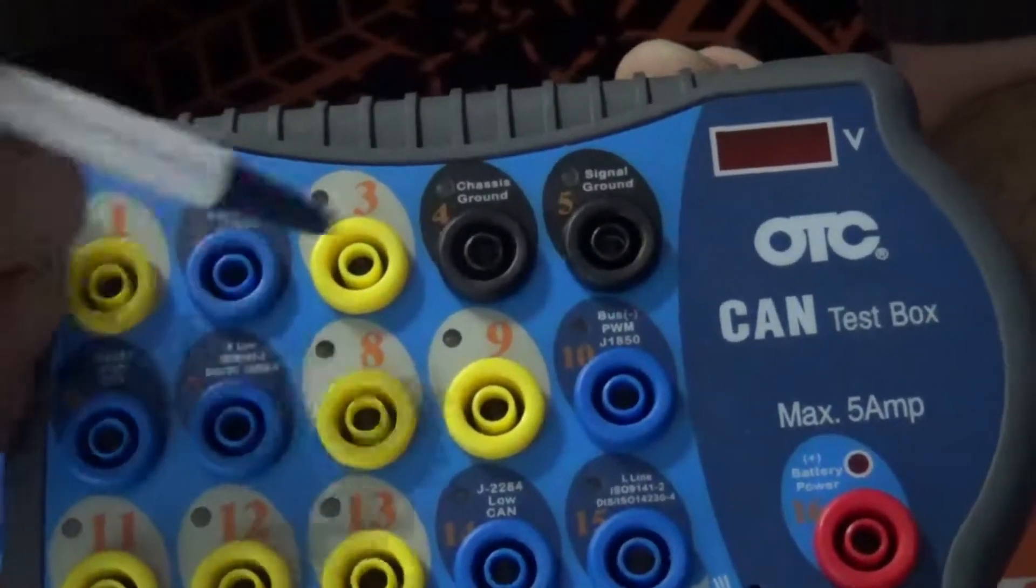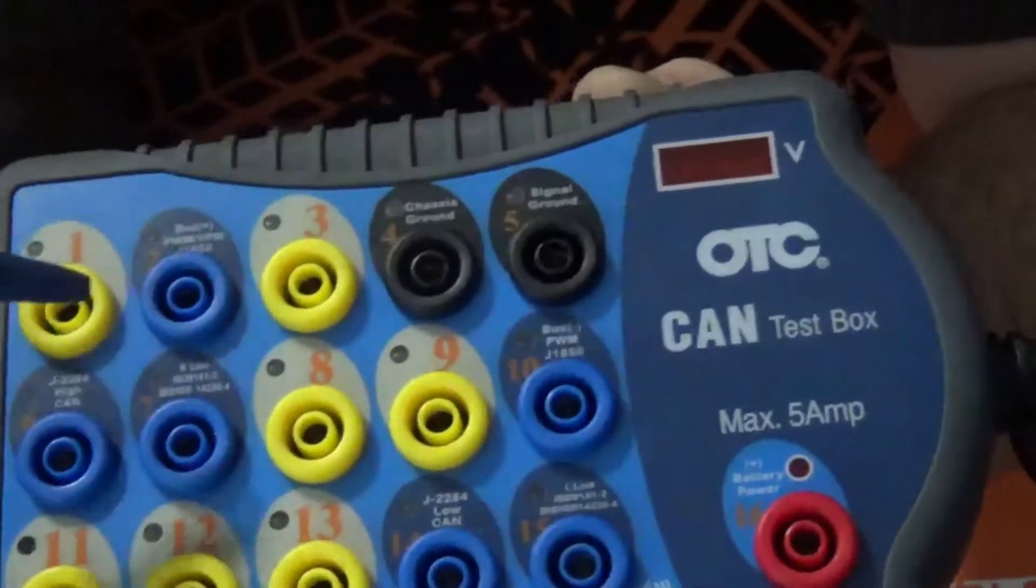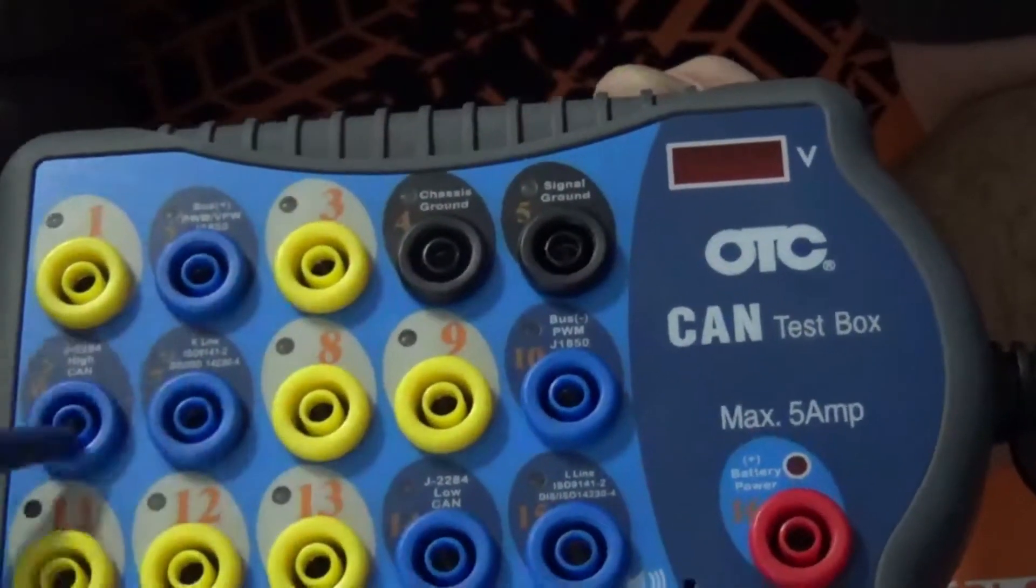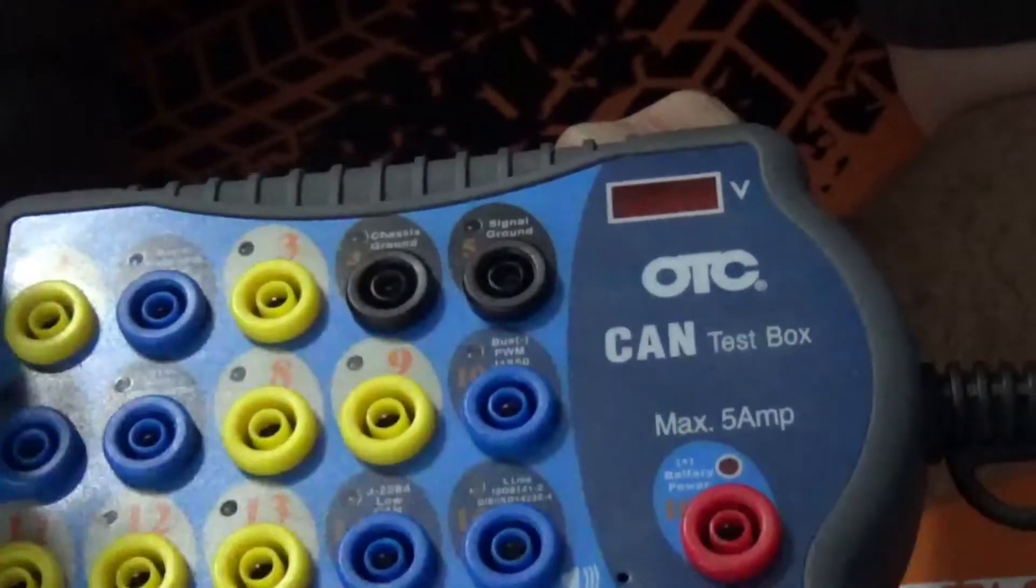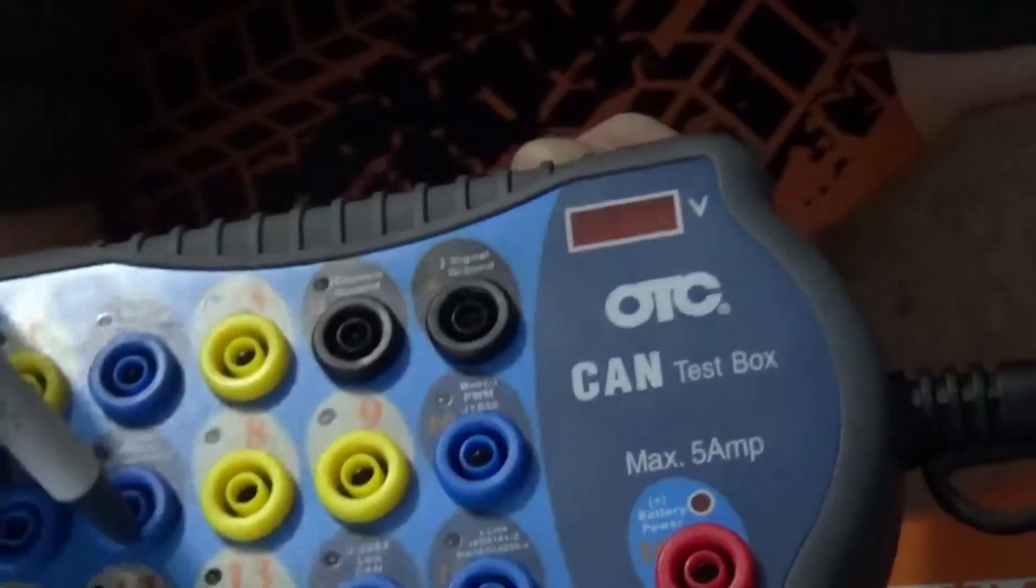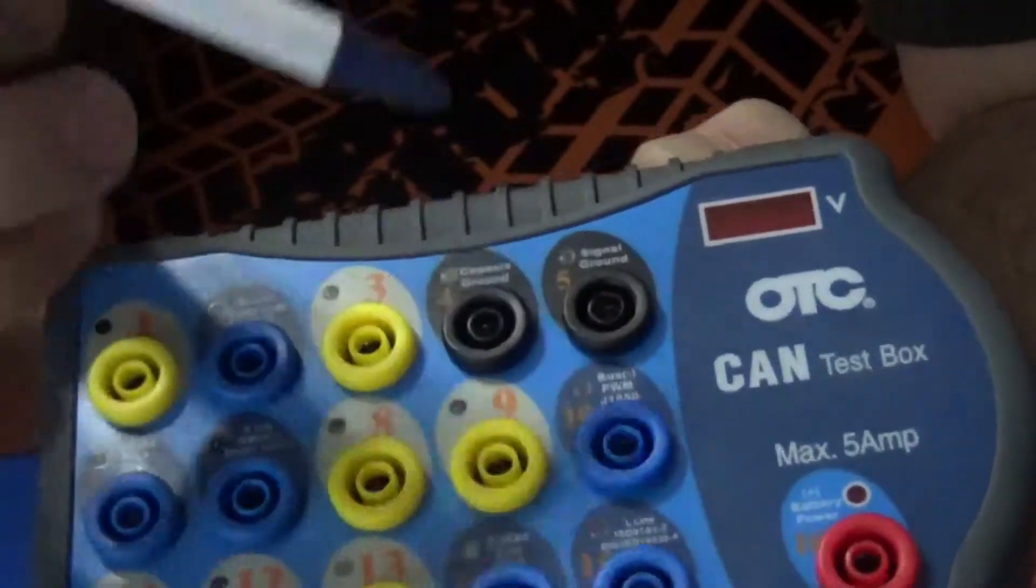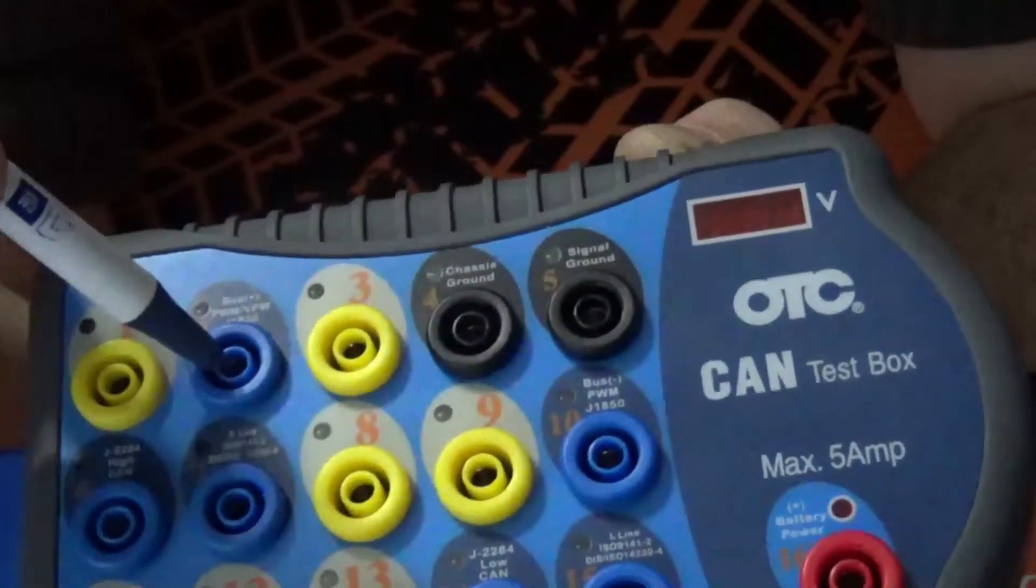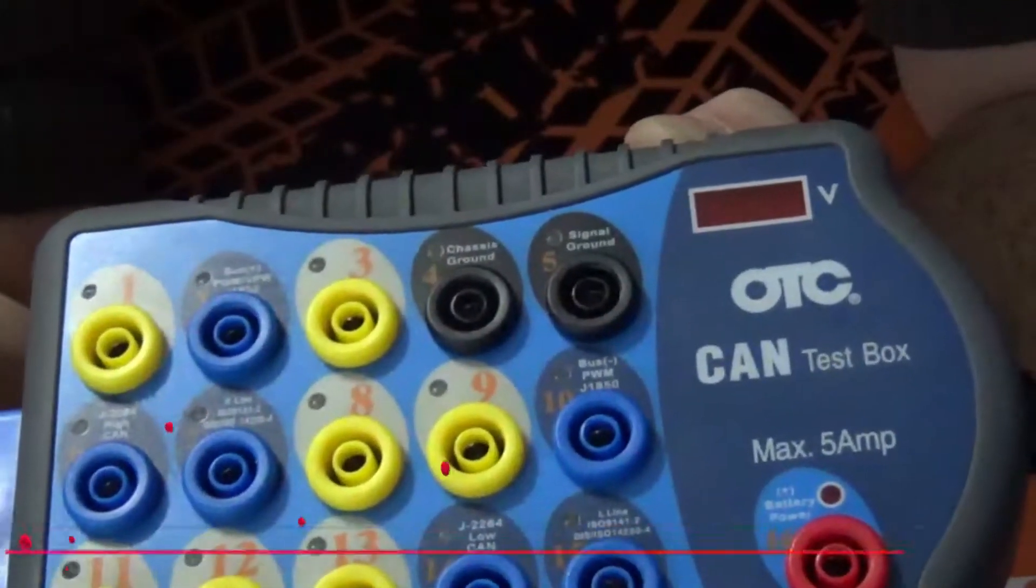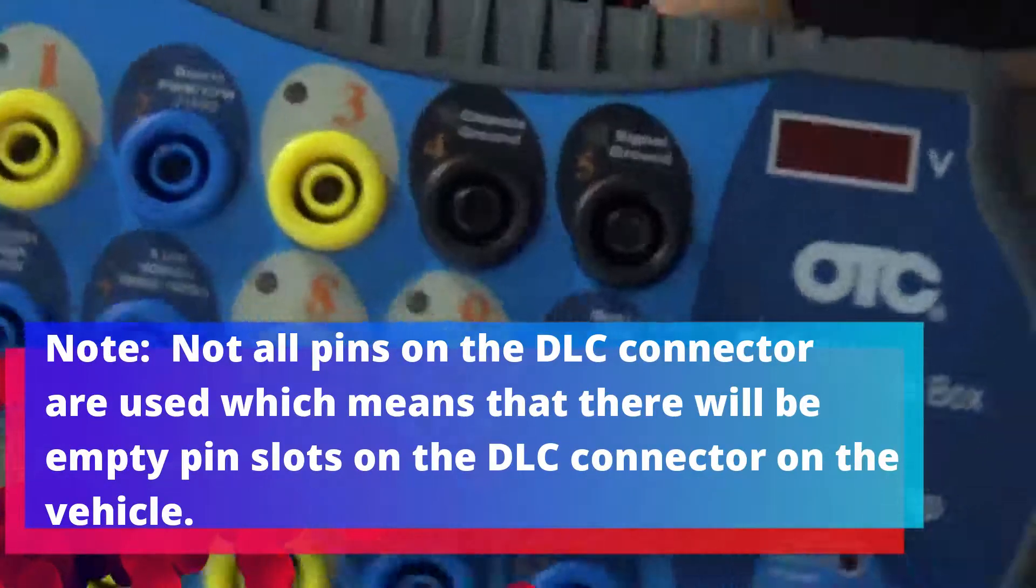And all the blue ones are your basic data bus lines. So like 6 and 14 are your CAN high, CAN low. If you come over here, pin 7 is your K line and pin 15 is your L line. And then you have your pin 2, which is your bus plus. Pin 10 is your bus negative. And that's basically all it is. It's just an easier way to get to your signals that you're trying to diagnose.